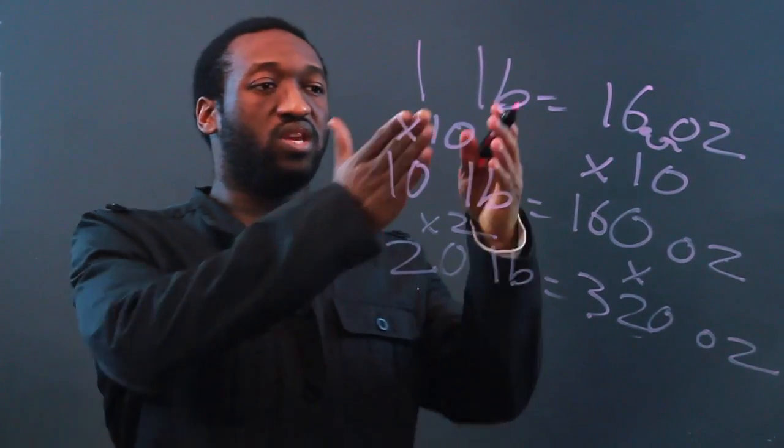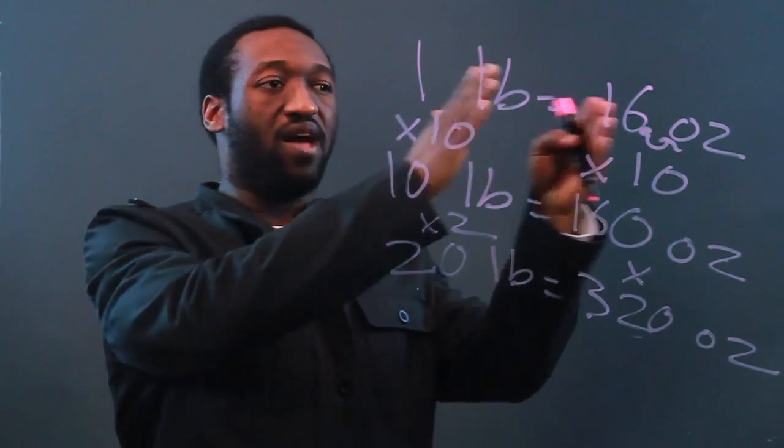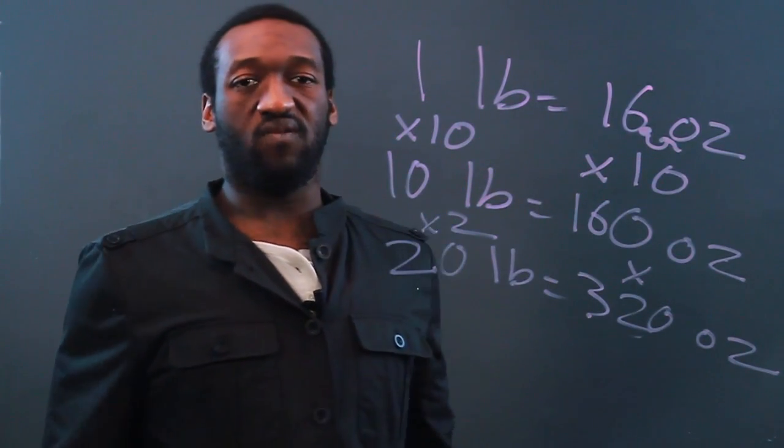So basically you want to use this equivalency, one pound equals 16 ounces, to convert from pounds to ounces. And that's how you convert from pounds to ounces.